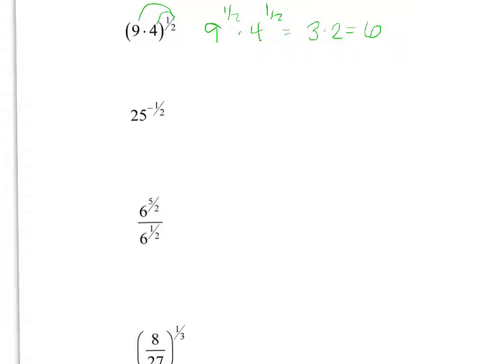Negative exponents, well we've kind of already talked about that with this one, but negative exponents move it to the bottom, so this will be 25 to the positive 1 half now with a 1 on top. So this will be 1 over the square root of 25 is 5, so it will be 1 fifth.